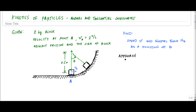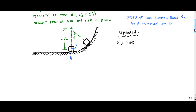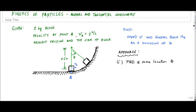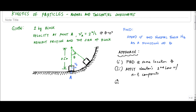We're going to use NT coordinates. What we want to find is the speed of the particle and the normal force exerted by the ground on the particle as a function of theta. Theta equals zero is at this vertical line here. Our approach: draw the FBD at some location theta. The velocity at A of two meters per second is the velocity at theta equals zero degrees.